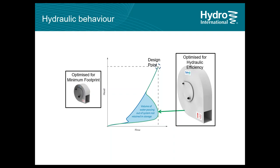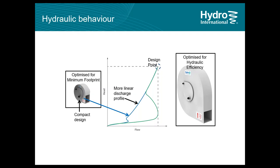However, in some cases — like a retrofit application where the chamber is already constructed and space is limited — you may need to optimize the design to a minimum footprint. This changes the hydraulic response to give a more linear discharge profile, similar to an orifice, but it is still a better option because it provides larger clearance and therefore a reduced risk of blockage.